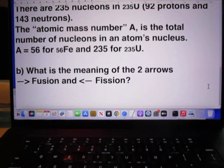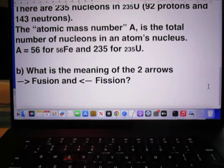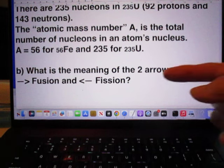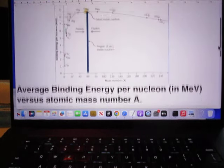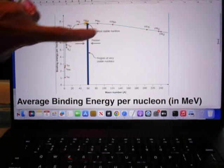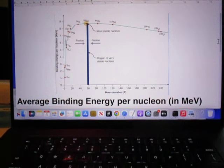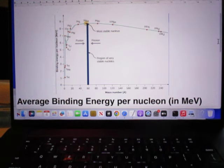Second question, what is the meaning of the two arrows? An arrow in this direction, with the word fusion. And an arrow in this direction, with the word fission. You see here, arrow in this direction, with the word fusion, and in this direction, with the word fission.